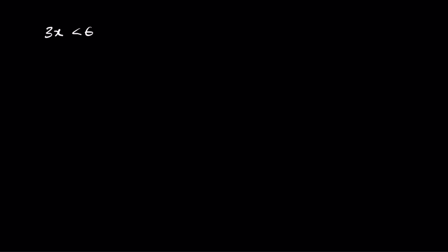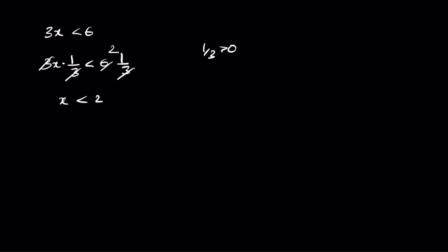Now the multiplicative property. We have 3x less than 6. To find x, divide both sides by 3, which is multiplying by 1/3. So 3x times 1/3 less than 6 times 1/3. Notice that 1/3 is greater than 0, so there is no sign change. The 3s cancel, giving x less than 2. In interval notation: negative infinity comma 2 open interval.